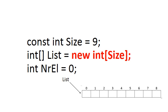So what we now have is the pointer list that points to an array that can contain nine elements.